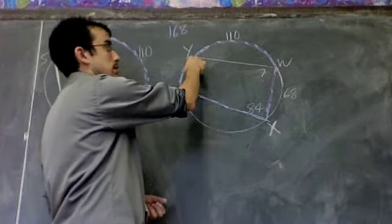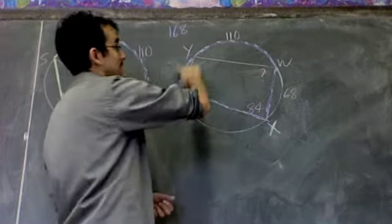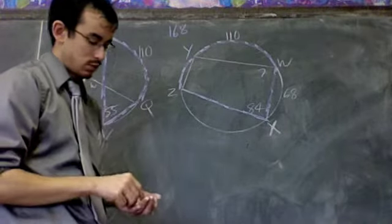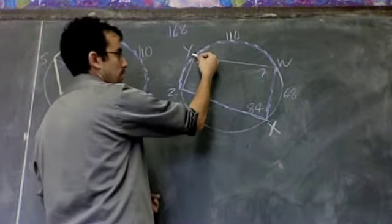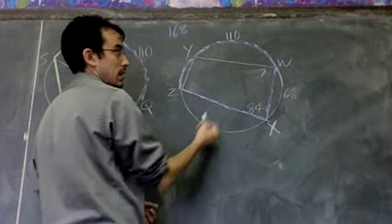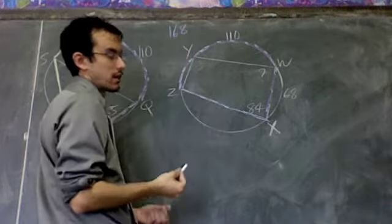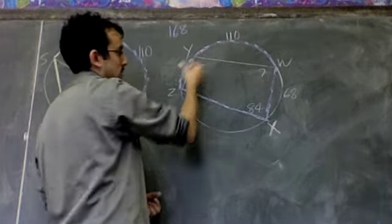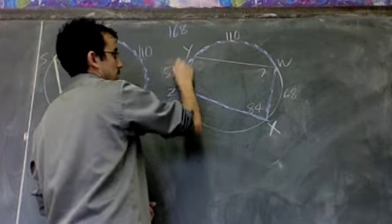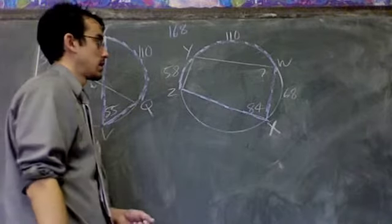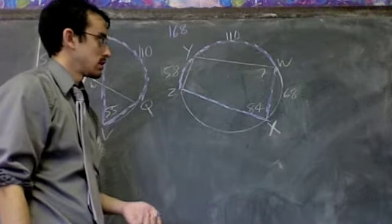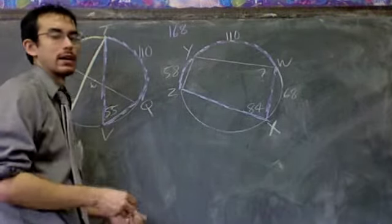From Z all the way to W is 168. That doesn't say from Z to Y is 168. It doesn't say from Y to W is 168. It says from Z all the way to W—Z, Y, W is 168. So let's use that fact to our advantage. I don't know ZY. I do know YW. And I know that these two pieces are supposed to add to 168. Well, 110 plus something gives me 168. In other words, 168 minus 110 gives me this. So this piece here, 168 minus 110 is 58.